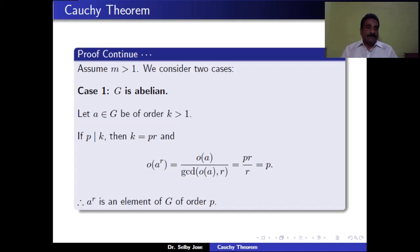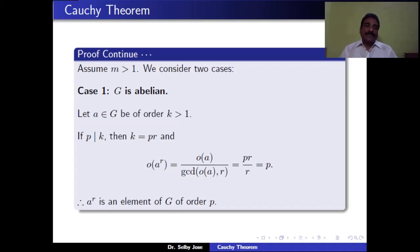Now assume M > 1. We consider two cases: G abelian and G non-abelian. In the first case, assume G is abelian. Take any element A in G with order K, where A is not the identity, so K > 1. If P divides K, then K = P·R for some integer R. Therefore, the order of A^R equals K / gcd(K, R) = PR / R = P. That means A^R is an element of G of order P. So if P divides K, then G has an element of order P.